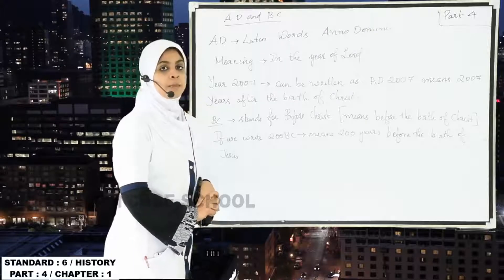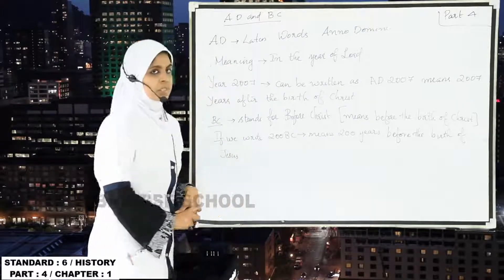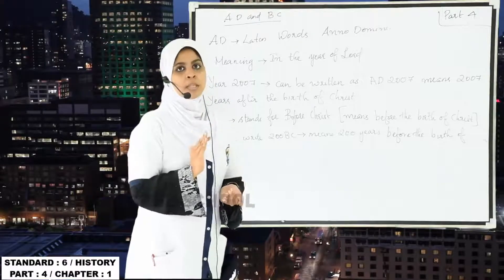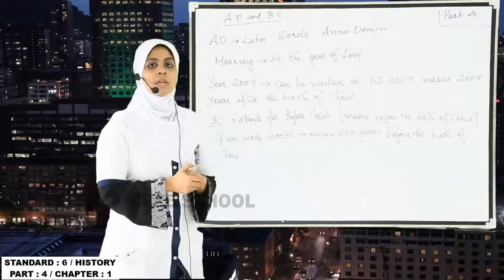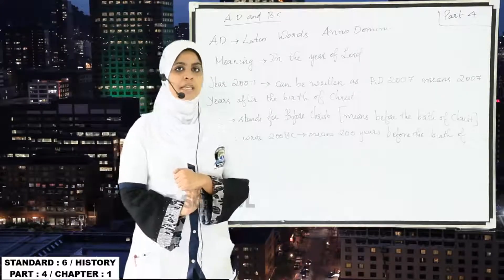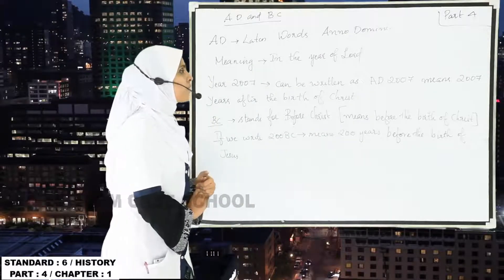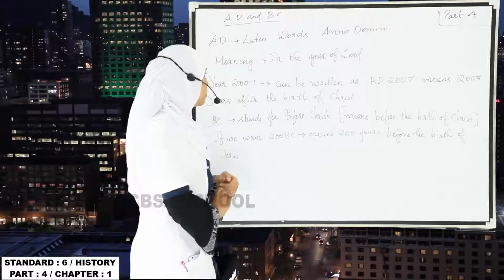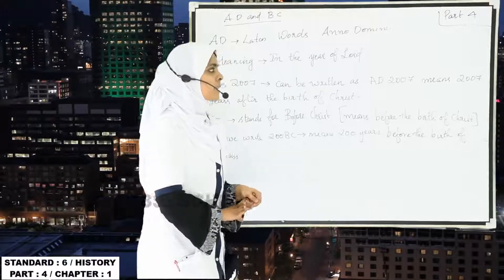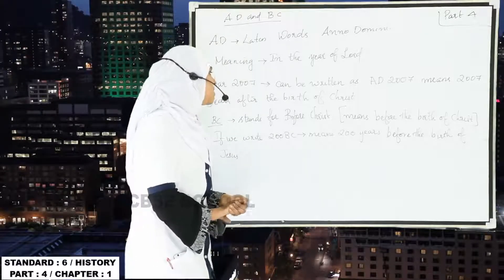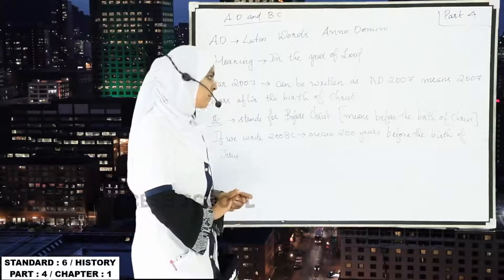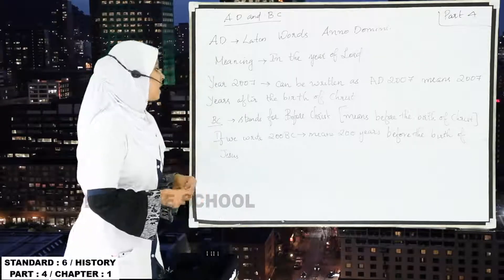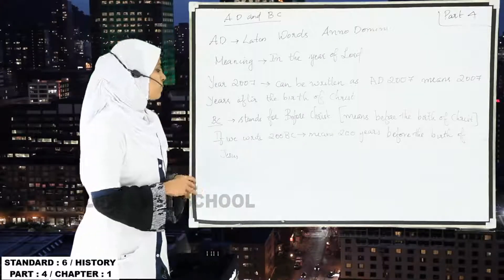If we are writing 200 BC, it means 200 years before the birth of Jesus. So we have studied about two terms used in the case of years — AD and BC. AD is derived from the Latin words Anno Domini, meaning 'in the year of the Lord,' and 2007 can be written as AD 2007, meaning 2007 years after the birth of Christ. BC stands for Before Christ, meaning before the birth of Jesus Christ. If you write 200 BC, it means 200 years before the birth of Jesus.